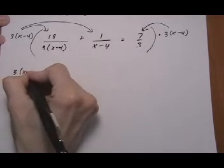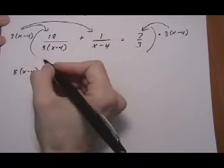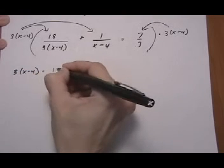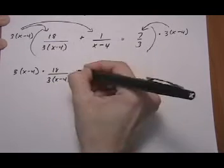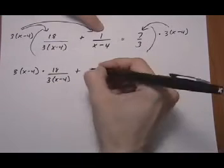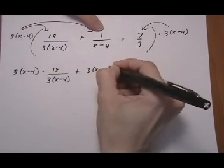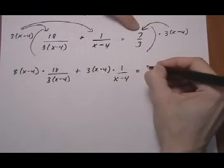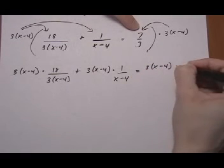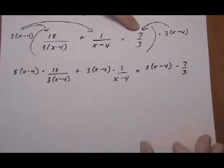So we get 3 times x take away 4 times 18 over 3 times x take away 4, plus, now the next one gets it, 3 times x take away 4 times 1 over x minus 4 equals and the next one gets it, 3 times x minus 4 times 7 over 3.